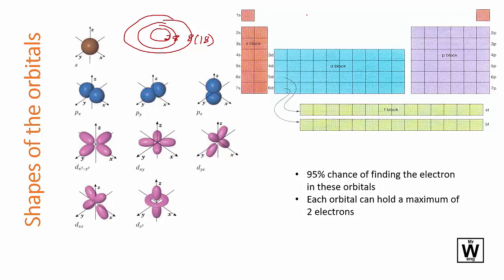This is a 1s electron here, so you can have the first one here and then the second electron here. That's the two electrons, that's the first energy shell.